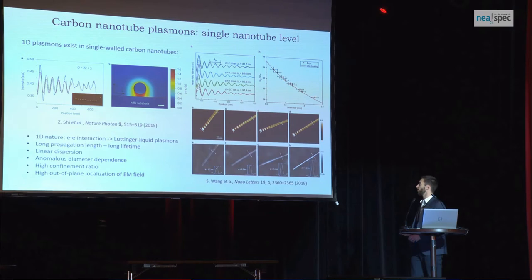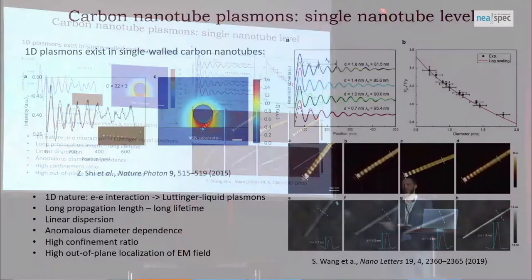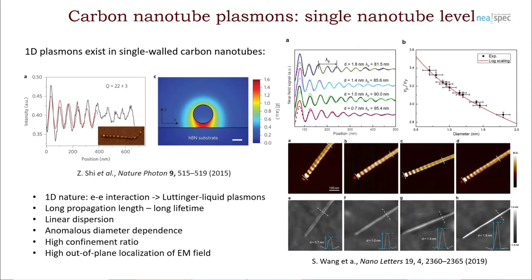A few years ago, these plasmon polaritons were actually visualized by SNOM. They are very special because the nanotubes are 1D-like objects, so the electrons are confined in a one-dimensional space and the electron-electron Coulomb interaction is not negligible anymore. This leads to a new electron state called the Luttinger liquid state, and the plasmons inherit the properties of these states — giving them long lifetime and thus longer propagation lengths, and a special linear dispersion compared to conventional Fermi liquid plasmons.